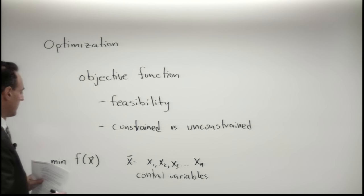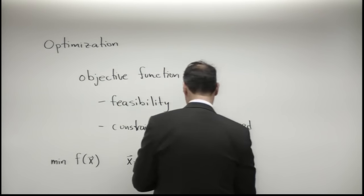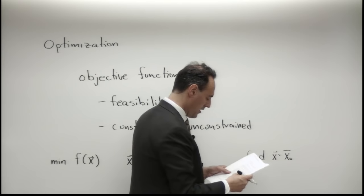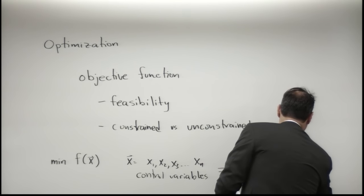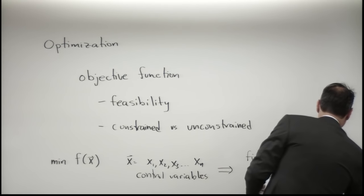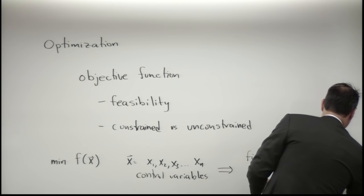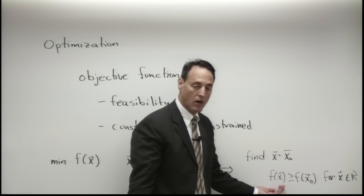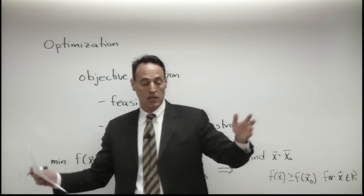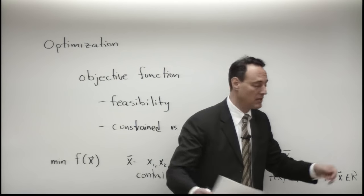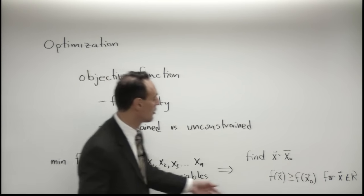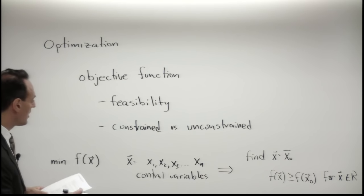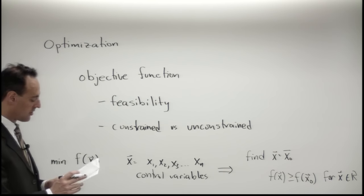What does it mean to be a minimum? This is said to have a minimum if I can find an x0 where f(x) is greater than or equal to f(x0) for all x in some region. I look at all my x values, and if I can find this x0 so that it's always smaller or equal to f(x) for the whole region of interest. This is where you can impose constraints — the region could be all of space, or your region could be constrained, giving you feasibility and constrained optimization issues.